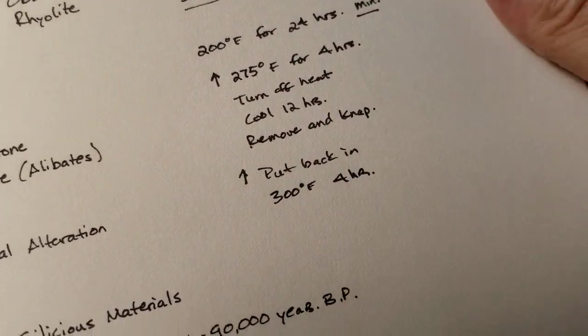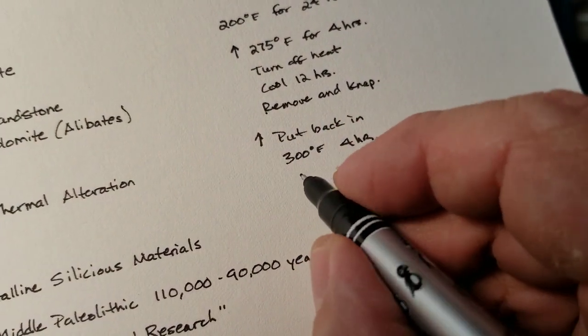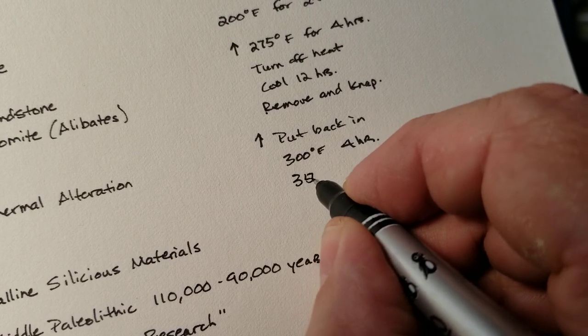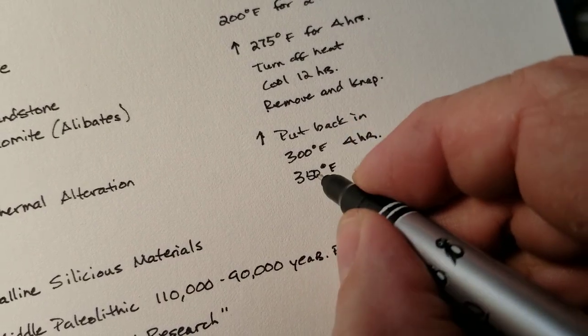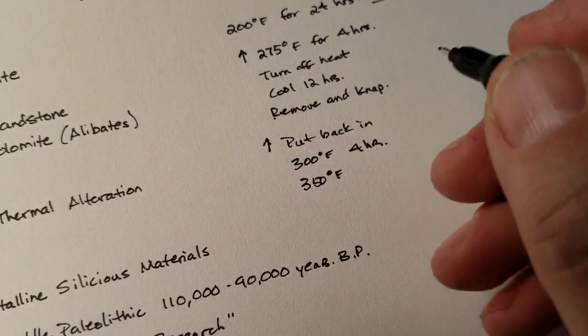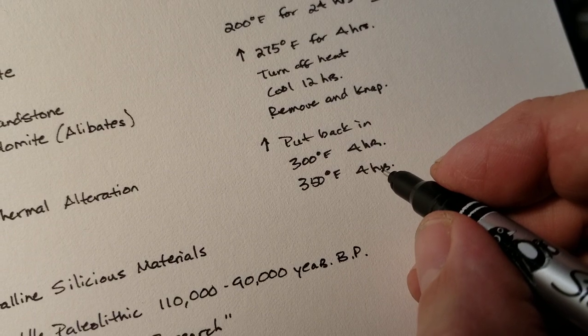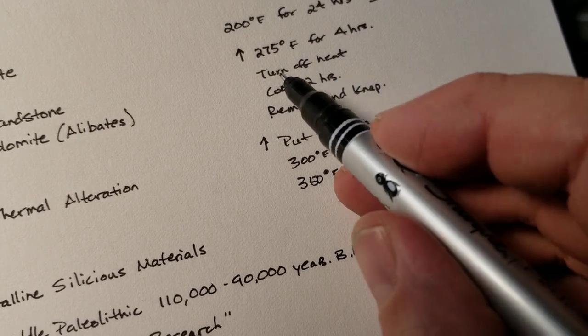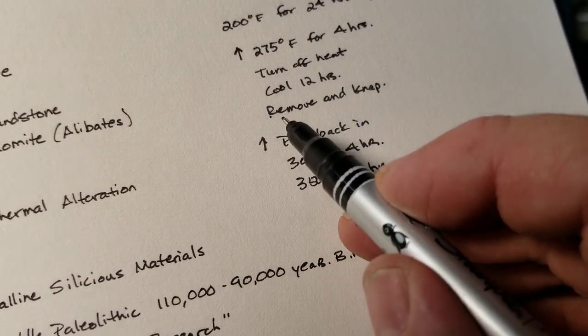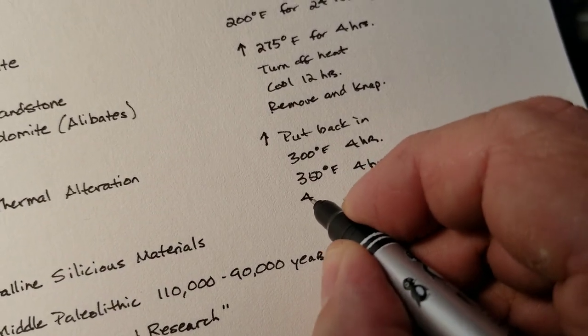If nothing happens, if it's not good to nap, or you don't like it, put it back in. Next time, 350 degrees. I know that's a jump of 50 degrees instead of 25. You can jump 25 degrees every time, four hours. Then turn off the heat, cool for 12 hours, remove and nap. Still no good. 400 degrees next time.